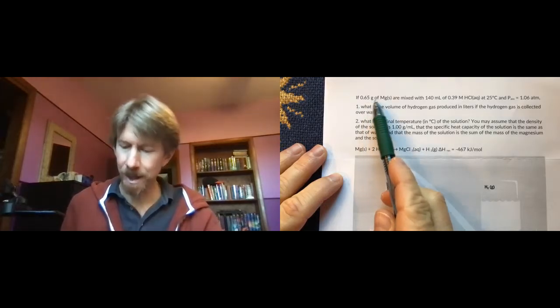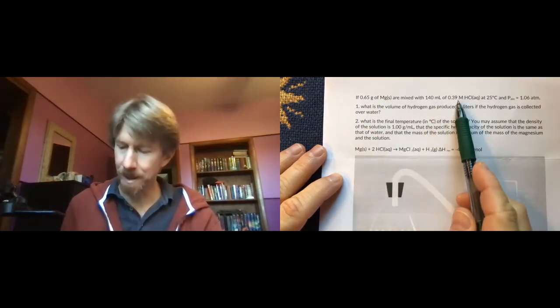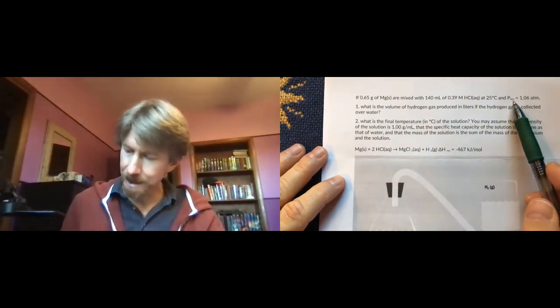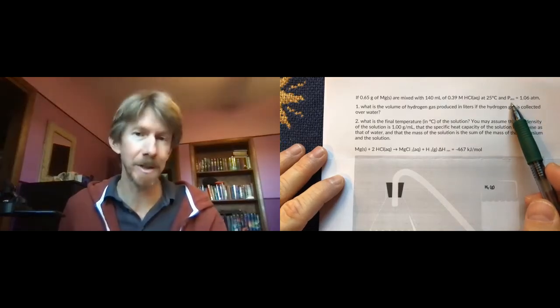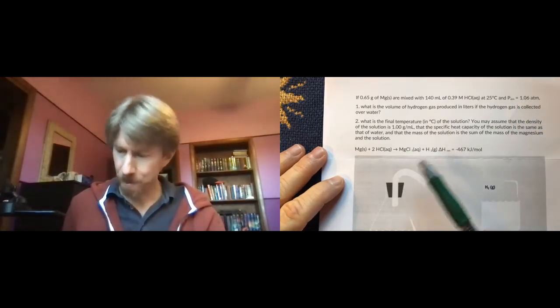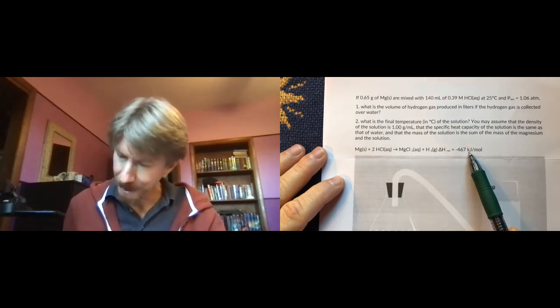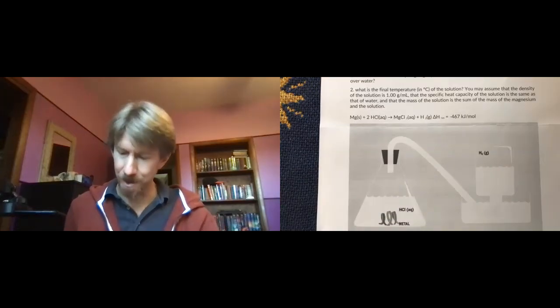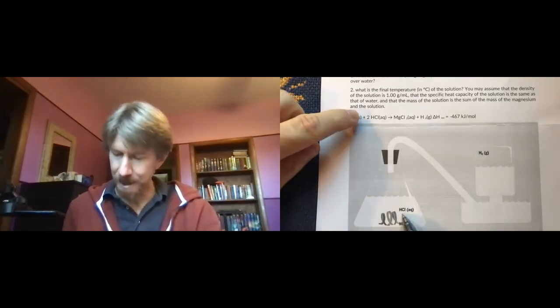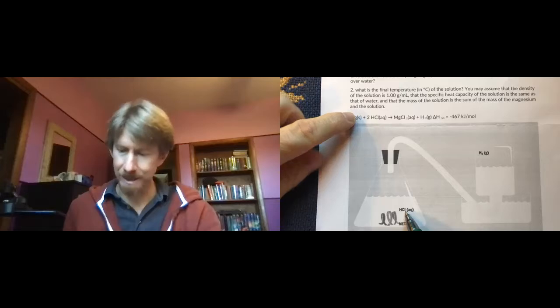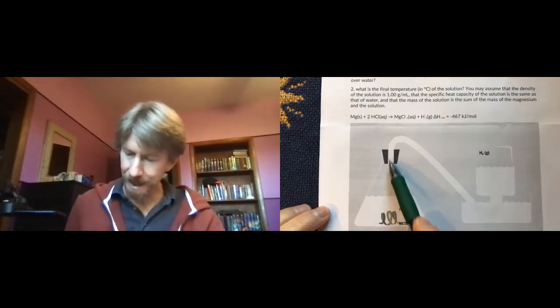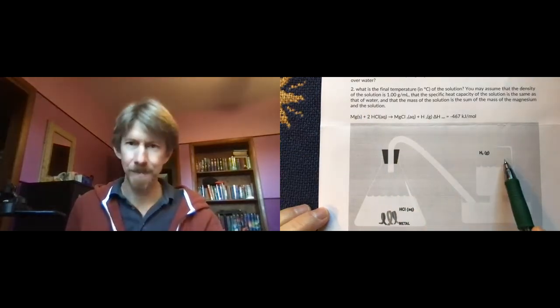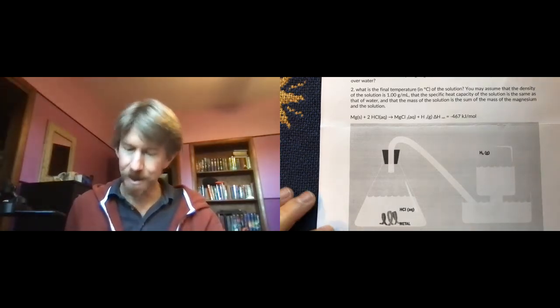You'll notice we know that we have the grams of magnesium, which is one of our reactants. We've got the milliliters and molarity of our other reactant. So this is a limiting reactant problem. We've got the total pressure, also the atmospheric pressure. And we've got the delta H reaction here. And we've got the initial temperature of the solution as well. And we've got a nice picture of what's going on here. We've got the metal magnesium reacting with the hydrochloric acid to produce a gas. That gas goes through the tube and it's collected over here.